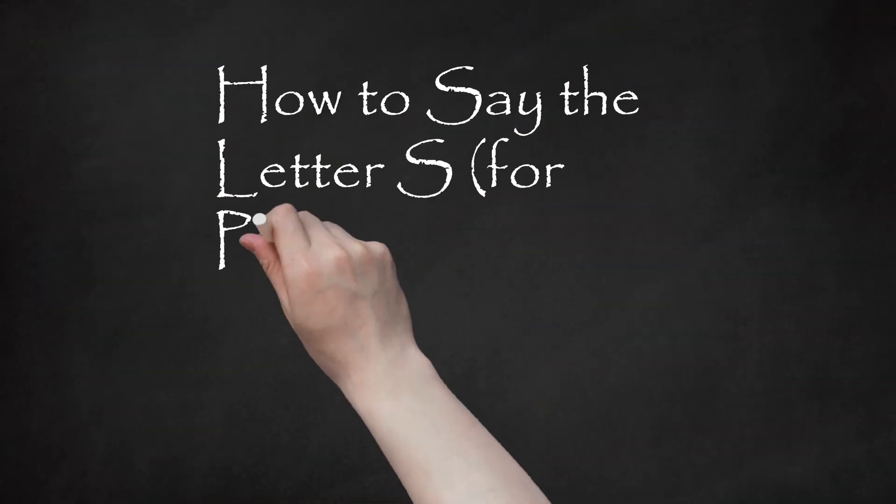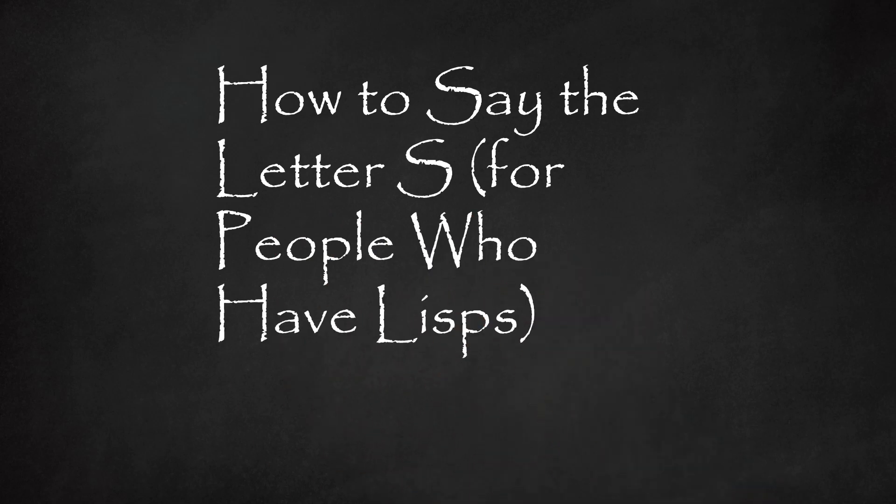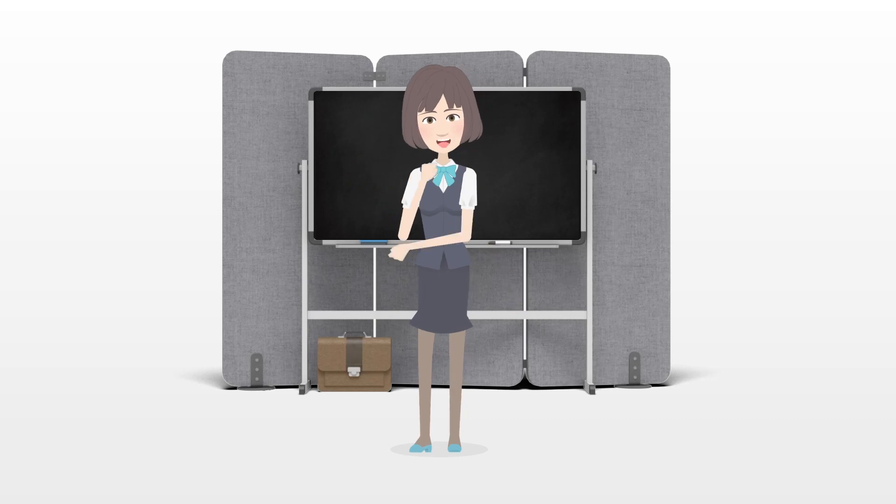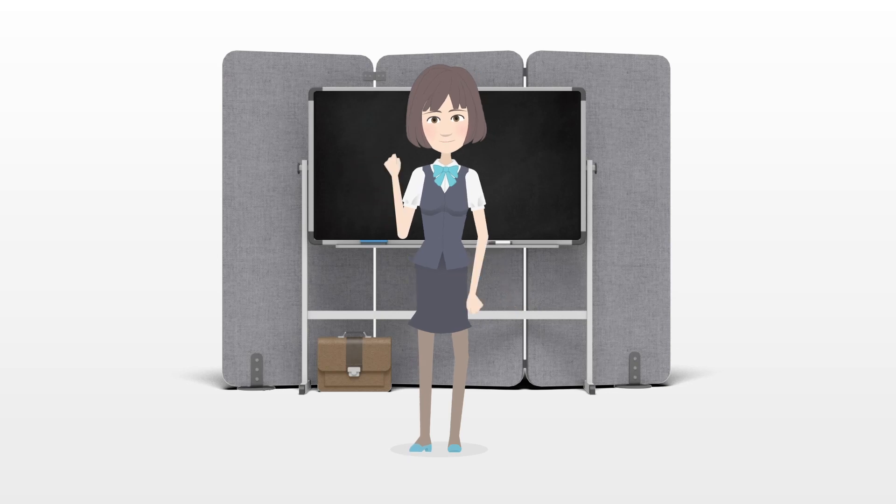How to say the letter S for people who have lisps. Speech therapists tend to avoid the word lisp, but the term is widely used for speech patterns that do not produce a clear S sound. Several types of speech impediments can cause this problem, but they can be divided into two categories.